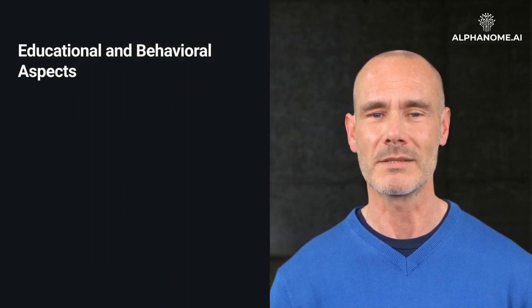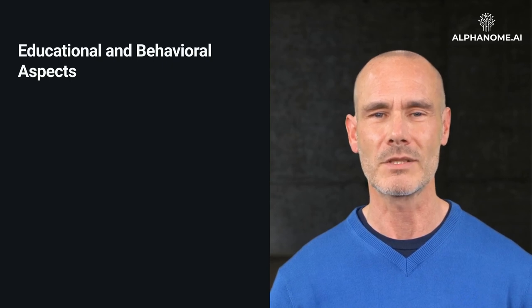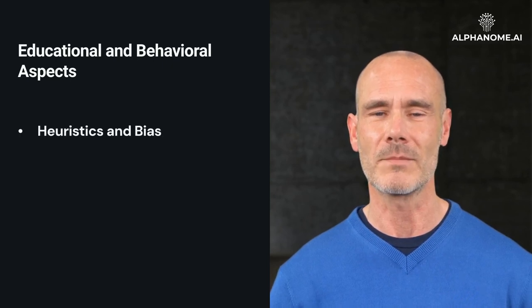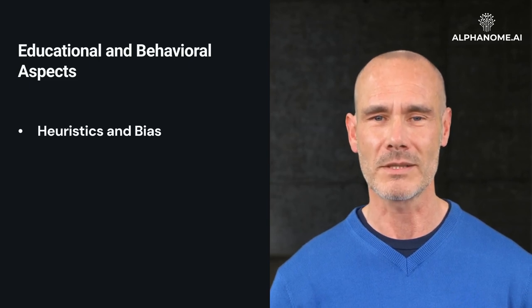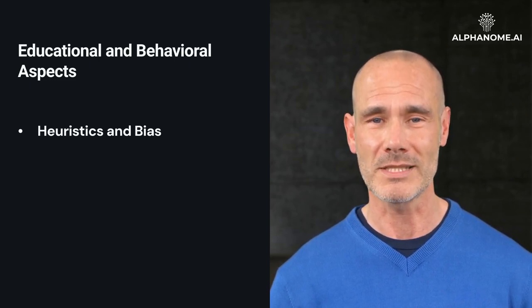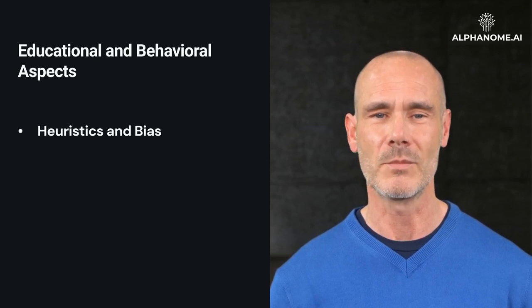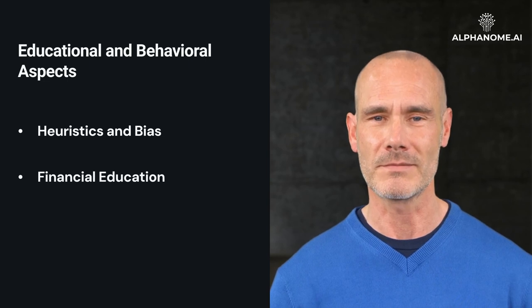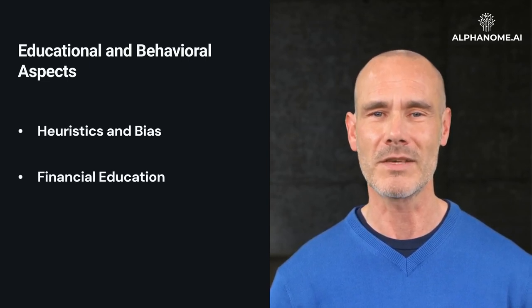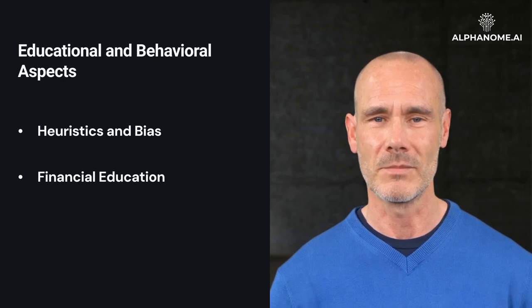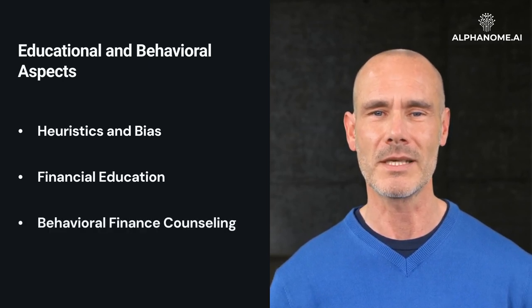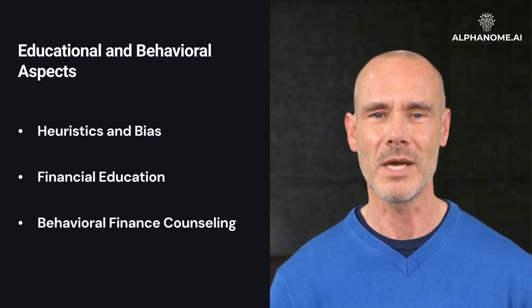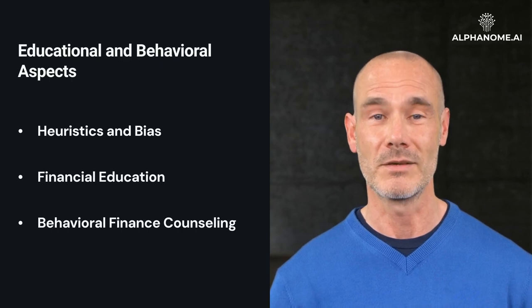Understanding the even distribution fallacy also involves recognizing the psychological and educational factors that contribute to it. The fallacy often stems from cognitive biases and heuristics. For instance, the availability heuristic might lead investors to focus on readily available aggregate data rather than digging deeper into individual data points. Improving financial literacy and engaging with behavioral finance professionals can help investors identify and overcome these cognitive biases.